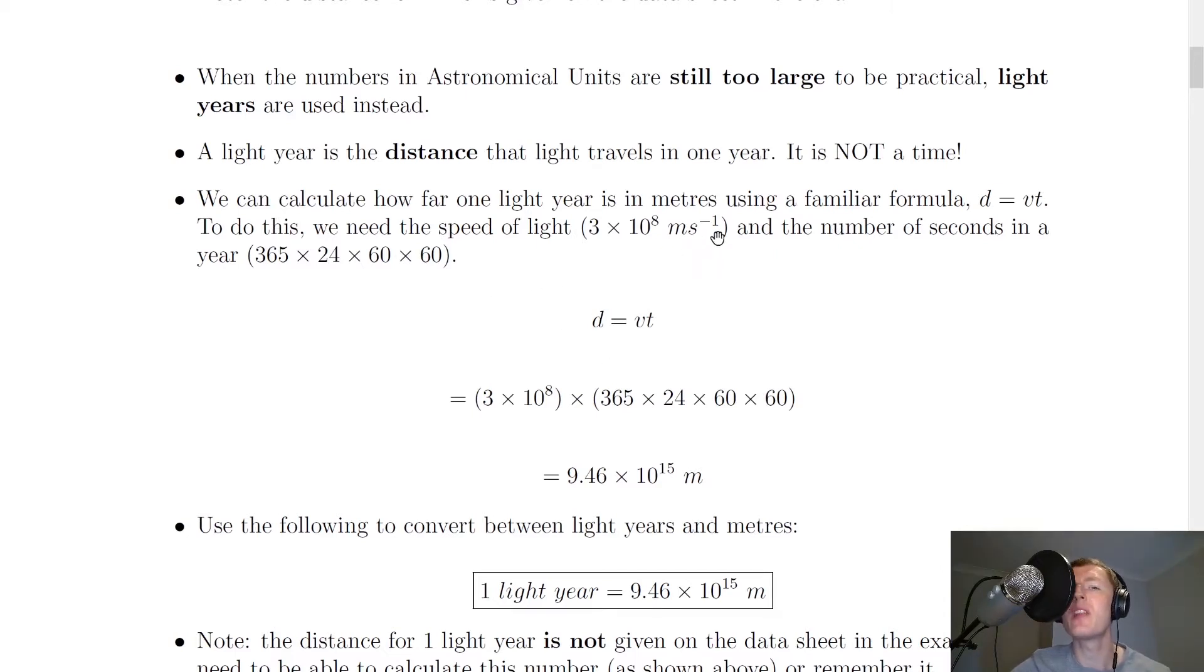We can calculate how far one light year is in meters using a familiar formula: distance equals speed times time, or d equals vt. We did this at National 5 level. To do this, we need the speed of light, 3 times 10 to the 8 meters per second, and the number of seconds in a year. You find this by taking how many days are in a year,